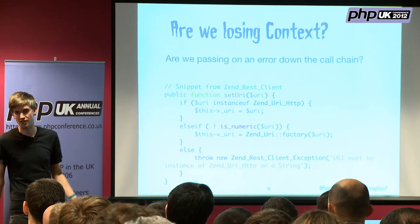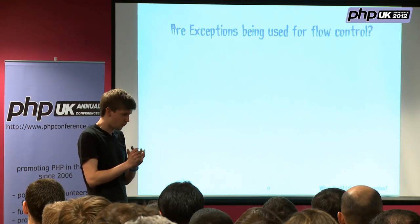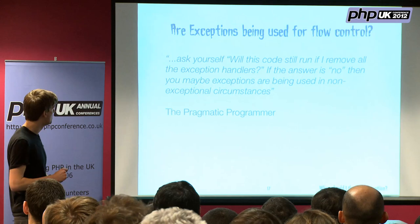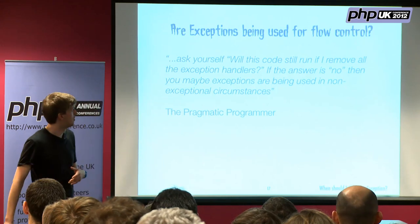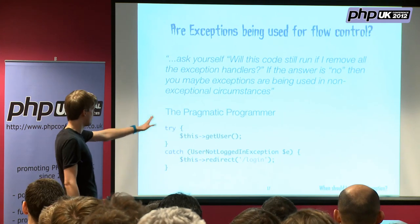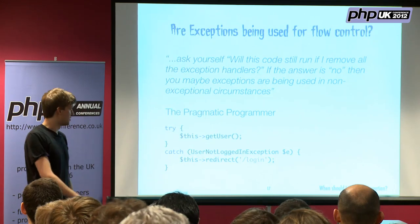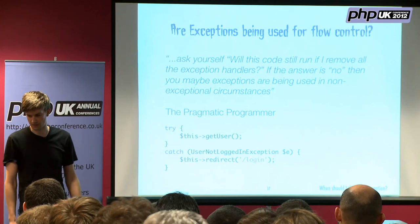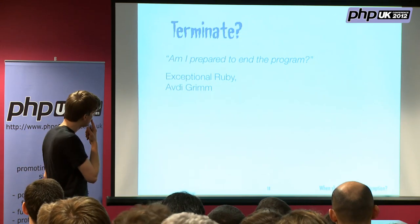You probably shouldn't throw an exception just for flow control. The Pragmatic Programmers say: 'Ask yourself, will this code still run if I remove the exception handling? If the answer is no, you're probably using it for flow control.' In this example we're getting a user and using a UserNotLoggedInException just for flow control — we're not really trying to fix the exception, just controlling how the program executes. You don't want to be using exceptions for that.